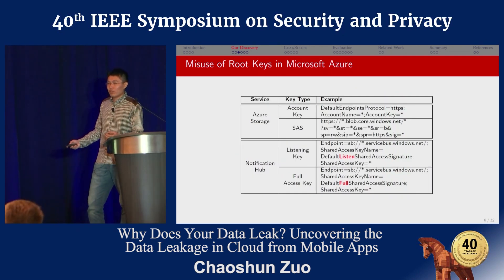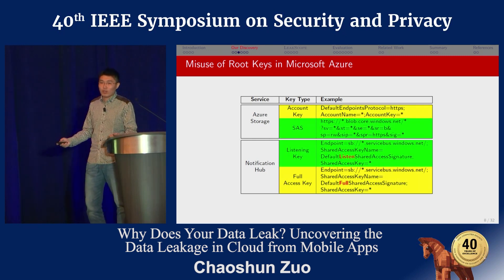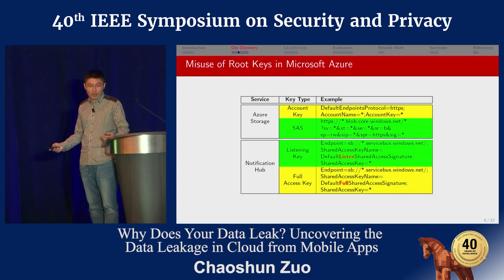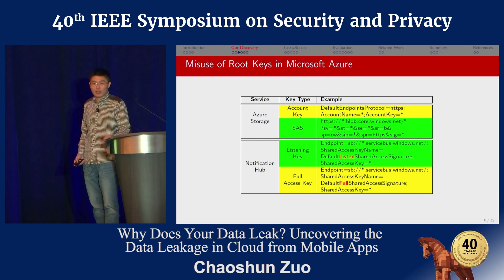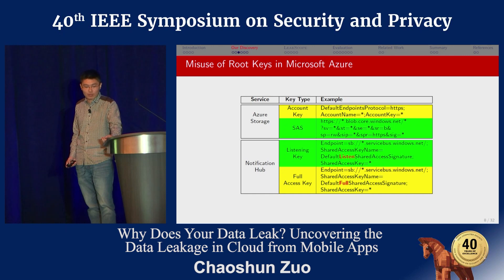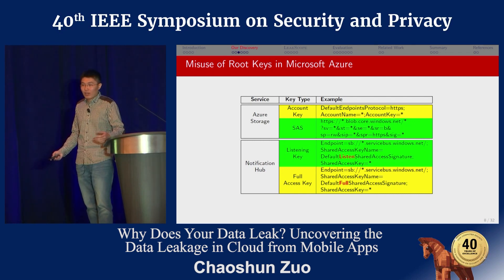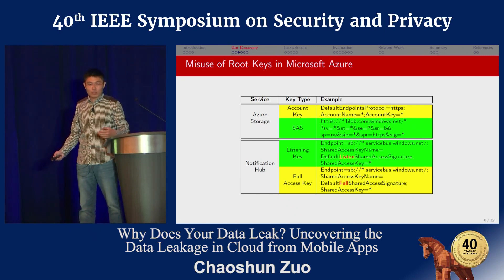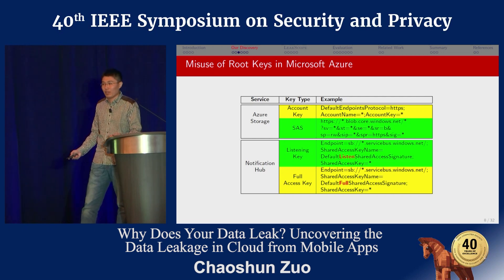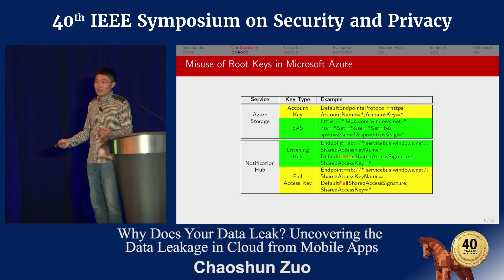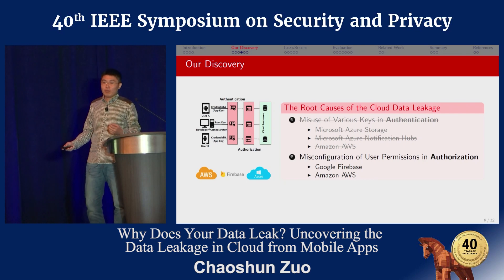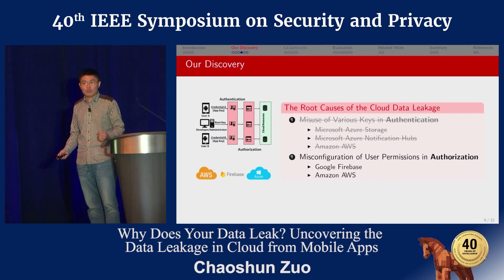For Microsoft Azure Storage, the first line in yellow is a root key and the second line is an app key — developers should put the SAS key into the mobile app and keep the account key private. For Microsoft Azure Notification Hub, the first line in green is an app key and the last one is a root key; the app key and root key are in different formats. For other cloud providers like Amazon AWS, the app key and the root key are the same format. Regardless of format, developers may misuse these keys — they may put the root key into the mobile app.